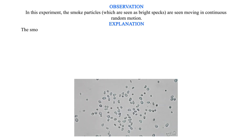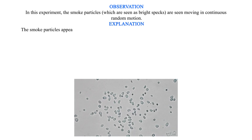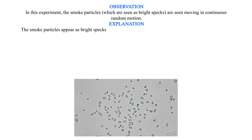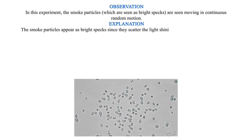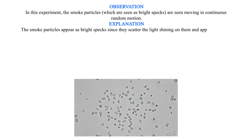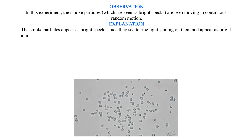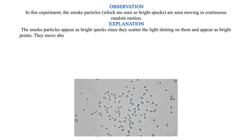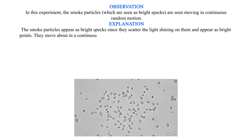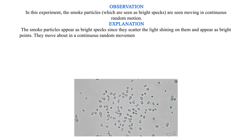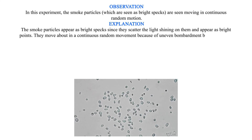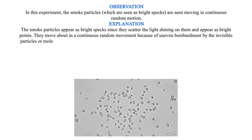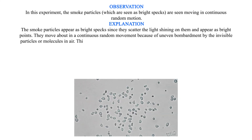Explanation: The smoke particles appear as bright specks since they scatter the light shining on them and appear as bright points. They move about in a continuous random movement because of uneven bombardment by the invisible particles or molecules in air.